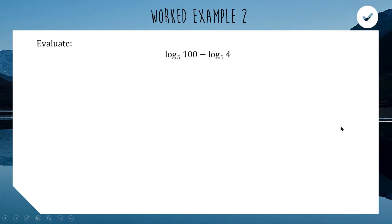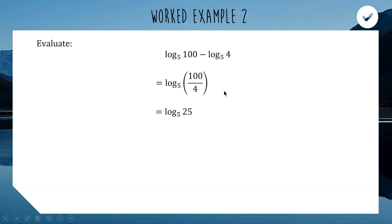Next example: log base 5 of 100 minus log base 5 of 4. Both logarithms have the same base, and we're subtracting, so we can combine them as a division: log base 5 of 100 divided by 4. Of course 100 divided by 4 is 25, so we need log base 5 of 25 — asking: 5 to the power of what gives 25? The answer is 2, since 5 squared equals 25.